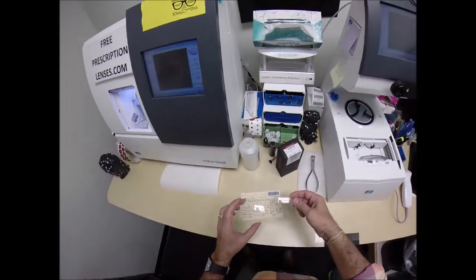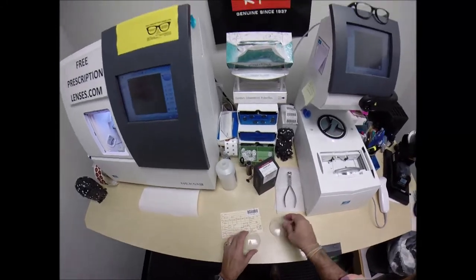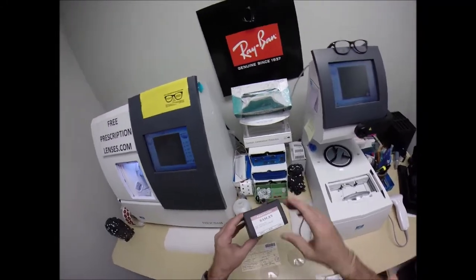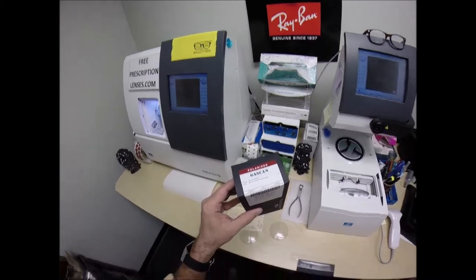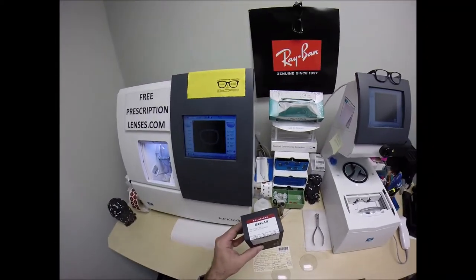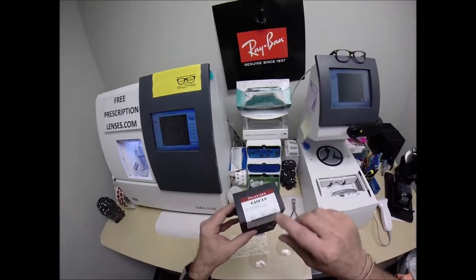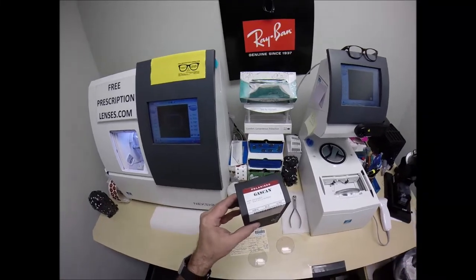So you don't have to take reading glasses on and off all day while you're working. I'm going to install them into the Oakley gas can, model number 9014, color 856, 60 eye size with a 15 bridge.